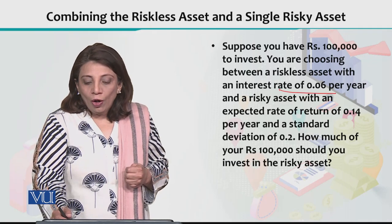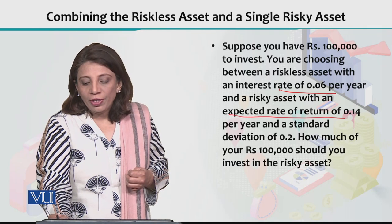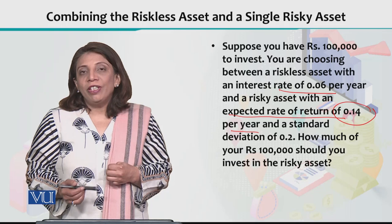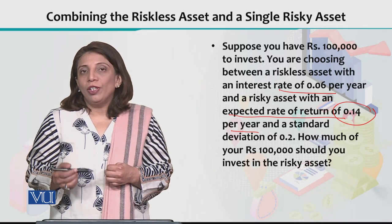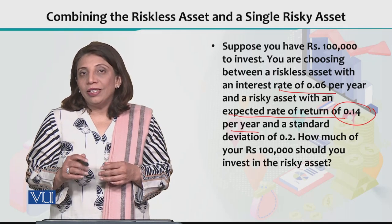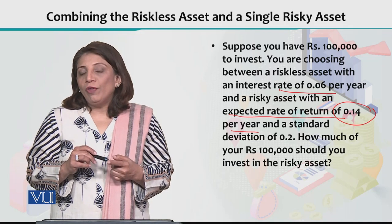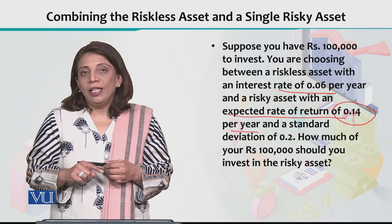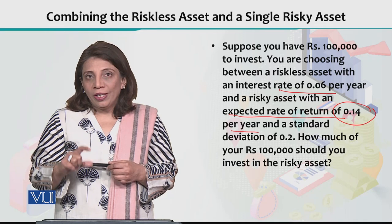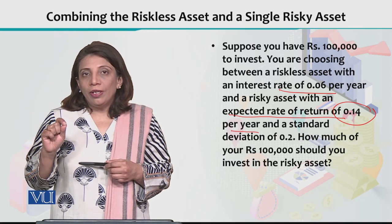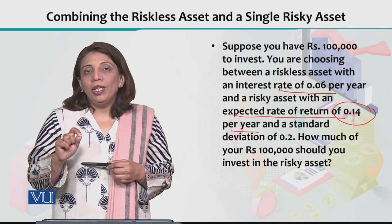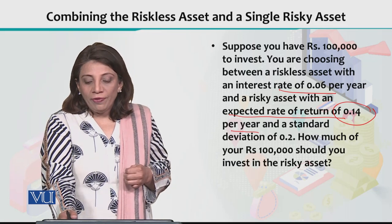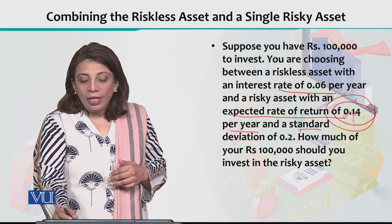The interest rate on the riskless asset is 0.06, or 6%. For the risky asset, the expected rate of return is 14%, which can be written as 0.14. These are yearly values. When you invest in the risky asset, the expected rate of return is 14%. We also need to look at the standard deviation, because with a risky asset, the 14% return is not guaranteed — it can vary. In this particular example, we assume that the standard deviation is 0.20, meaning there is a 20% fluctuation around the mean return.